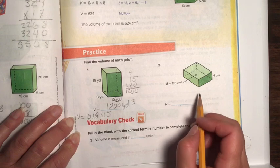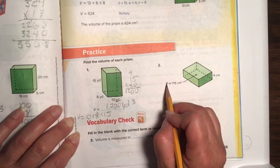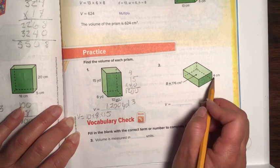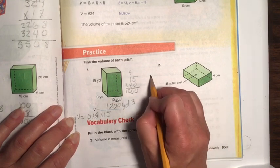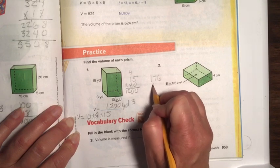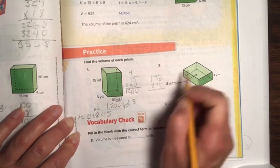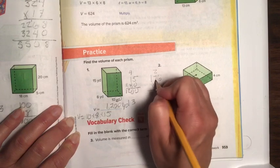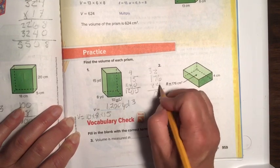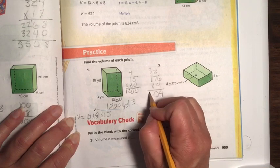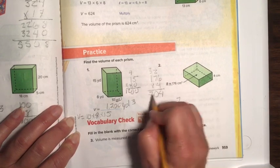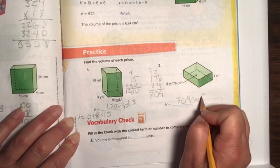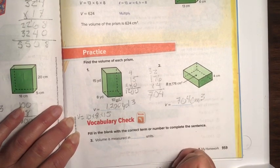Okay, now this one, they did a shortcut for us. They did length times width already, so we have a base of 176 times 4. So, I'm going to do 176 times 4. You probably can do this faster than me, and that's okay. 704 centimeters cubed, because it's a three-dimensional object. Good job.